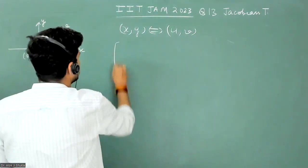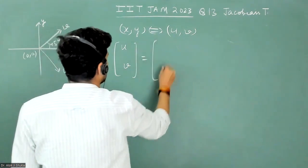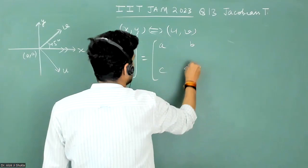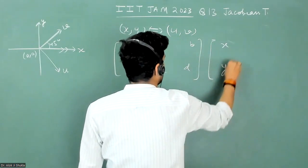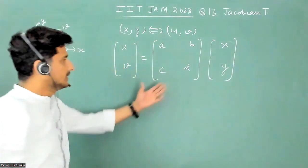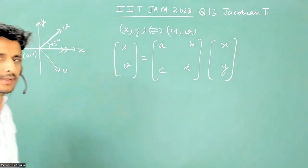So obviously in this case, what you get as a result is u, v. There will be a transformation matrix involved a, b, c, d and that will be operated on x, y. So this matrix will be operated on x, y and it will result into transformation matrix u, v.